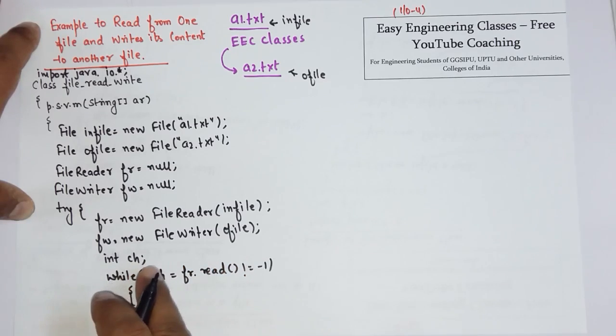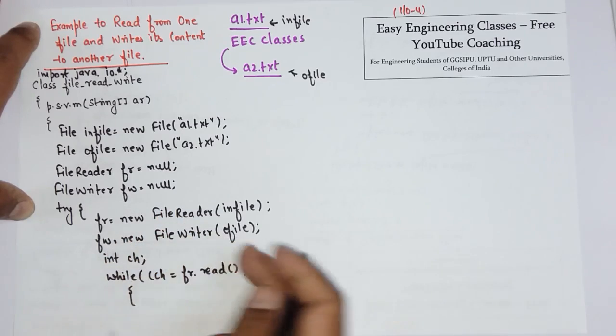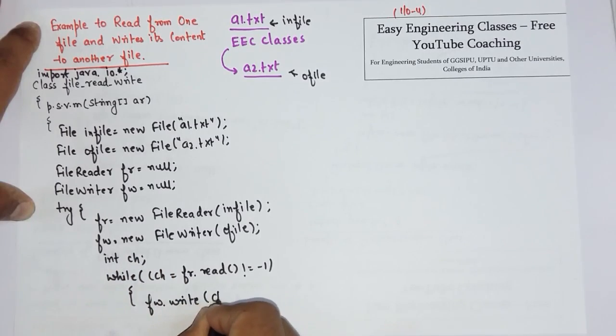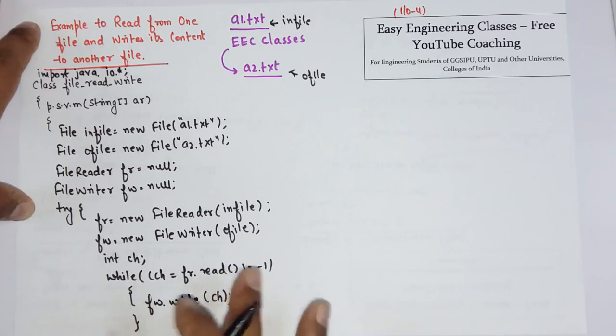Now I can write that value directly in the out-file with the help of this fw. So write fw.write(ch). This is the main logic - you have to use fw.write(ch).